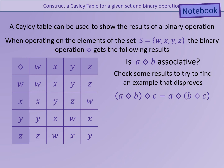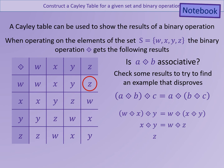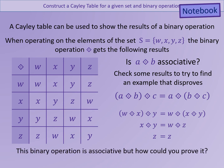We can check associativity by trying to find counter examples. We try a operation b operation c with brackets first around a and b, then around b and c. If we find three values where the answer differs, it is not associative. For example, trying W operation X operation Y: looking up W operation X and then applying Y gives Z, and trying the other grouping also gives Z. Finding no counter example is not sufficient proof of associativity — it turns out this binary operation is associative.